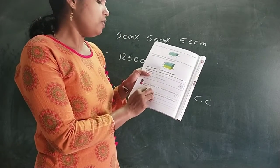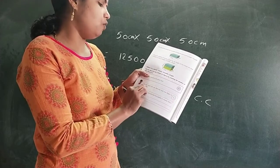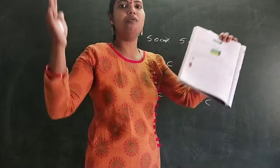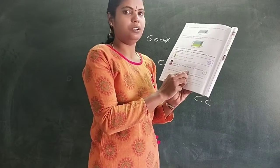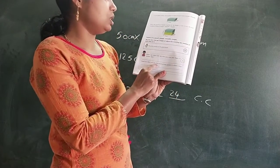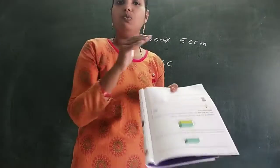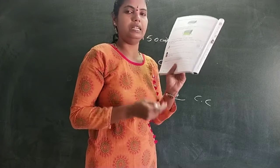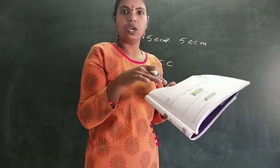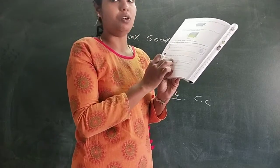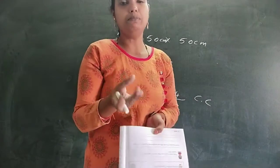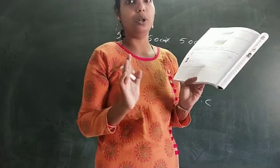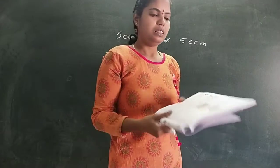Next — name one object you use that you wish was bigger in volume and why. You have to take any one object that you want to be bigger in volume and write it here. And next — name one object you use that you wish was smaller in volume. Suppose a tipping box — that is larger volume. The smaller volume could be a pencil box where we keep only pencils. Like that you have to write. I am telling only examples; you have to write your own.